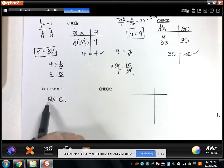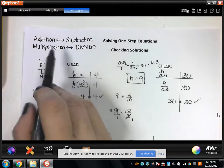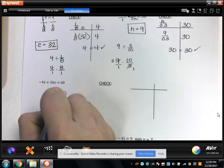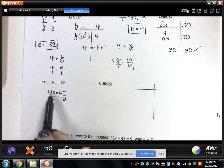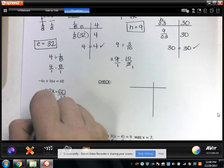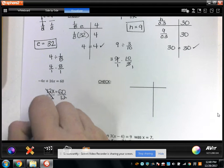X is being multiplied by 12. What's the opposite of multiplying by 12? Dividing by 12. So I'm going to divide both sides of the equation by 12. 12 divided by 12 is 1, so I'm left with x or 1x equals 5.